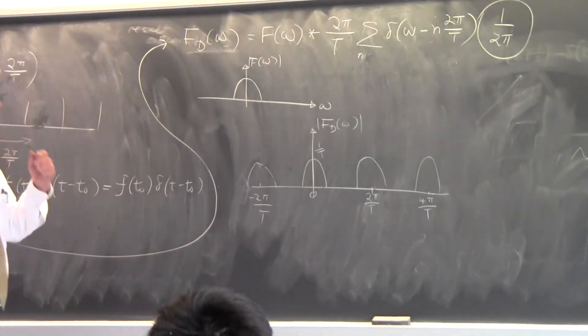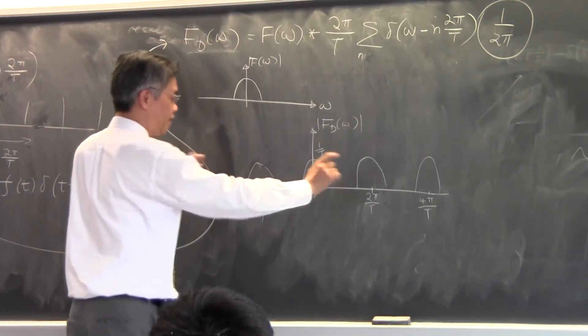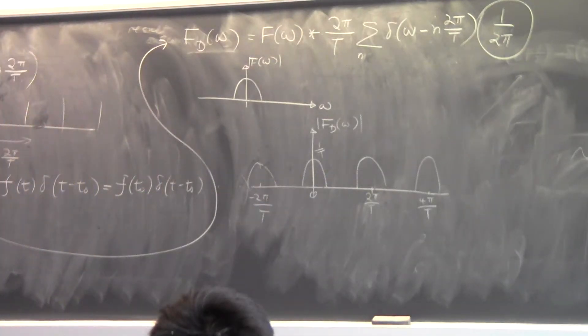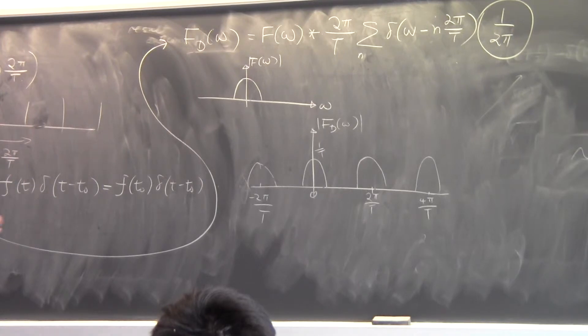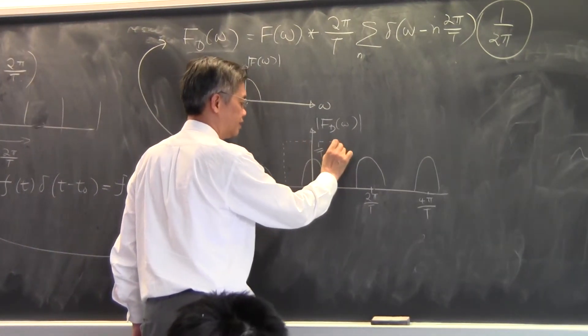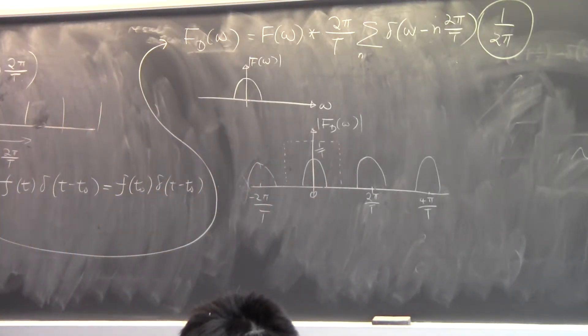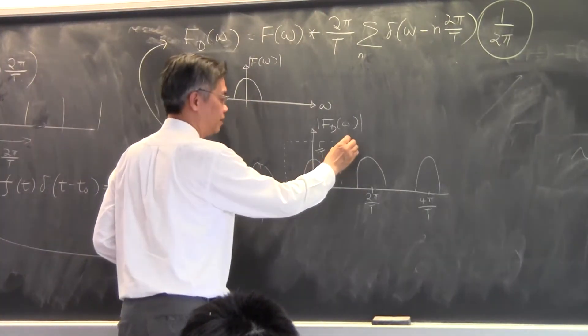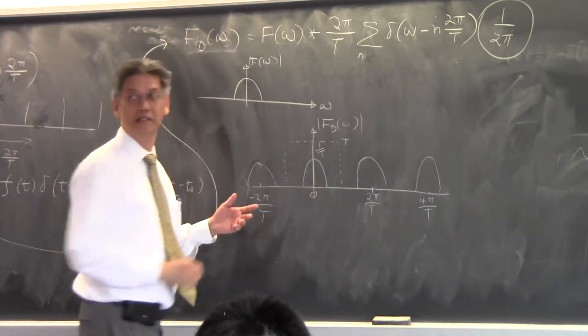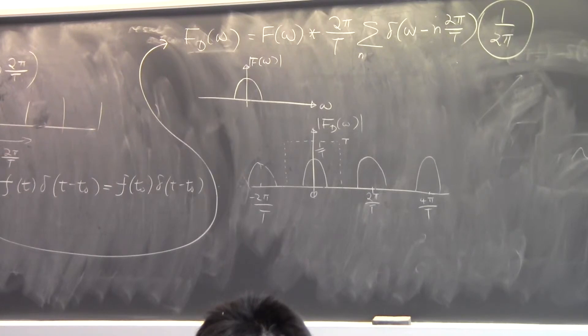And you want to make all these bands far apart enough so that they don't overlap. They don't overlap so that if you pass this system through a low-pass filter, which is an idealized one, as I just mentioned before, and if this low-pass filter has the amplitude of T, it cancels the 1 over T, and you get that original signal.